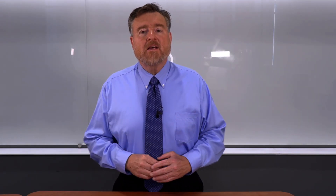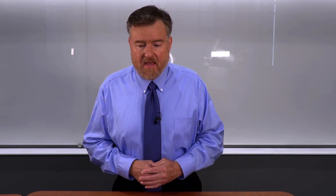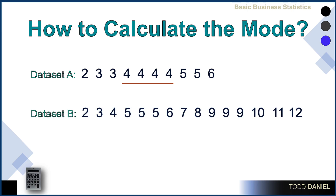How then do we calculate the mode? Let's take a look at this data set. What is the most frequently occurring score in these data? We can easily see that the mode is 4 because there are more 4s in this data set than any other number. Now consider data set B. What is the mode for this data set? This is a bimodal distribution. We have one mode at 5 and a second mode at 9.